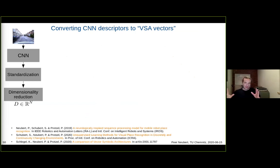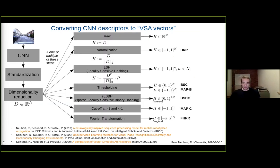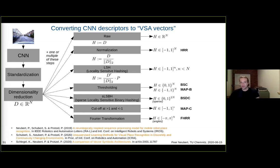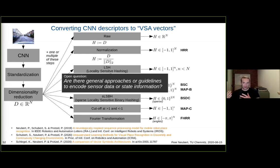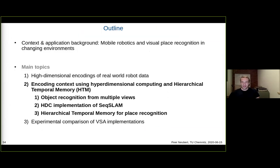To summarize so far: we use images, CNNs, some form of standardization, and possibly dimensionality reduction. But we don't yet really have a VSA vector — it's just a high-dimensional vector. To create a proper VSA vector, we use several techniques: normalization, locality-sensitive hashing, thresholding, and sparsity-creating algorithms. Information about these approaches is scattered across many papers with no single resource on how to create a vector for a particular VSA from a CNN descriptor. General guidelines for encoding sensor data are an open question.